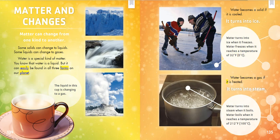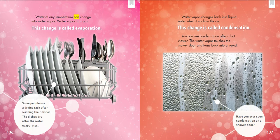Water becomes a gas if it is heated — it turns into steam. Water turns into steam when it boils, at 212 degrees Fahrenheit, or 100 degrees Celsius. Water at any temperature can also change into water vapor, which is a gas. This change is called evaporation. Some people use a drying rack after washing their dishes; the dishes dry after the water evaporates. Water vapor changes back into liquid water when it cools in the air — this change is called condensation. You can see condensation after a hot shower, when water vapor touches the shower door and turns back into a liquid.